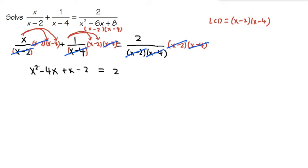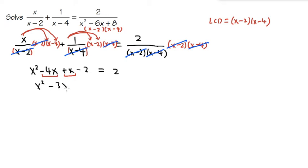As we can see, we have x to the second power — this is what we call a quadratic equation. We are going to make one side equal to 0, then factor the other, and solve from there. But first, we see that we have negative 4x plus x, so we can combine like terms. We'll have x squared, then negative 4x plus x is minus 3x, and then we have minus 2, and this is equal to 2.